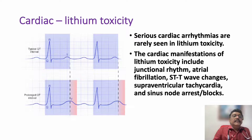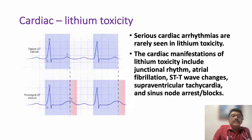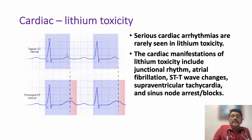On the ECG, the QTc is prolonged. If QTc is prolonged, the patient can develop various types of arrhythmias, especially ventricular arrhythmias. Other findings include junctional rhythm, atrial fibrillation, ST-T wave changes, supraventricular tachycardia, and sinus node arrest or blocks.